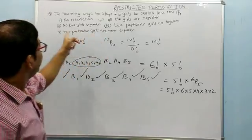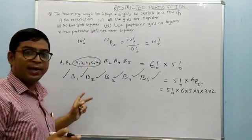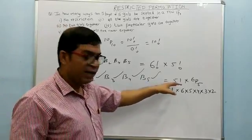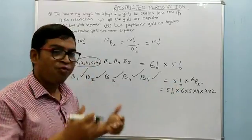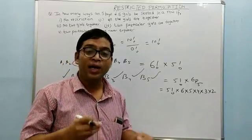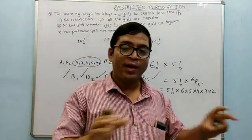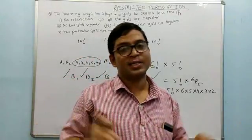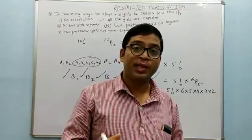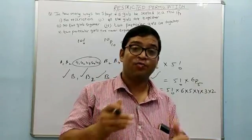No two girls together — just follow the gap method. Where there is no restriction, apply that permutation, then find how many gaps are created in between. The rule is: if five things are arranged in a row, six gaps are created; if ten things are in a row, eleven gaps are created. In circular permutation, one gap fewer is created — we will see that later.